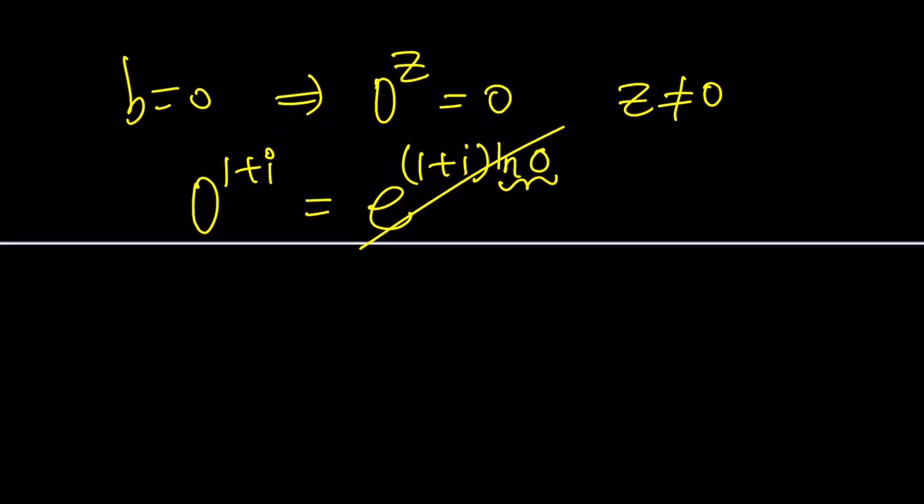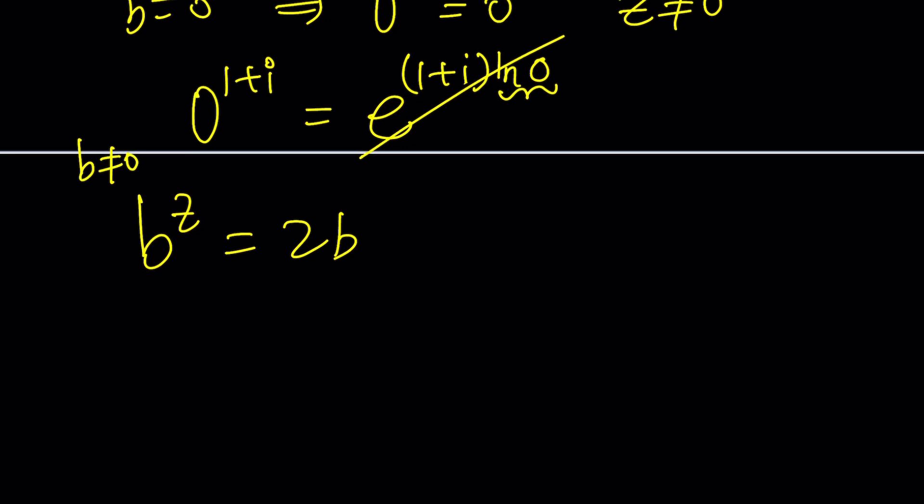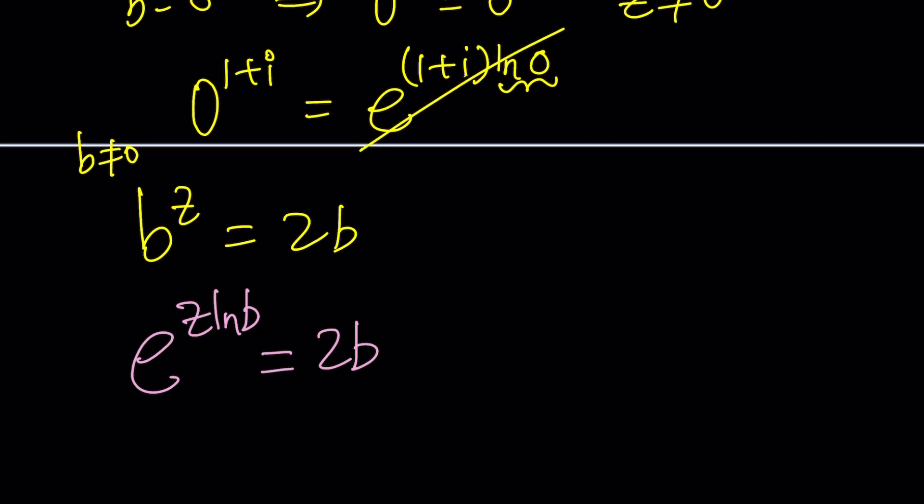First, let's try to solve the problem. To solve this, first, I will assume that B does not equal 0 because we already covered that. And we're going to write this as a complex exponential: e to the power Z ln B equals 2B. And you know why I picked B instead of C? 2B or not 2B. Here's my two cases.